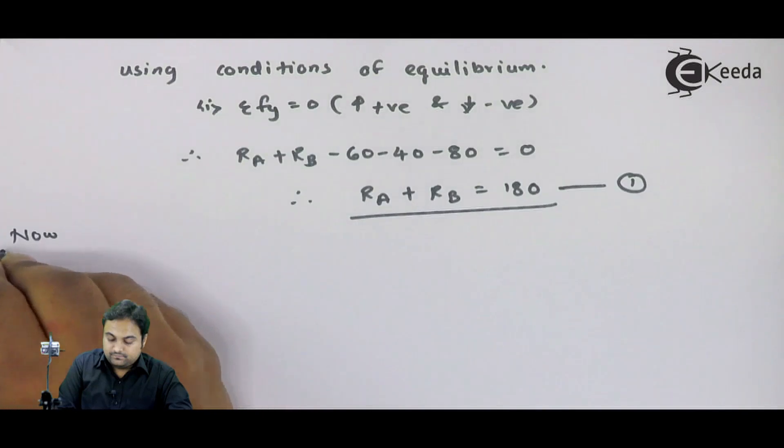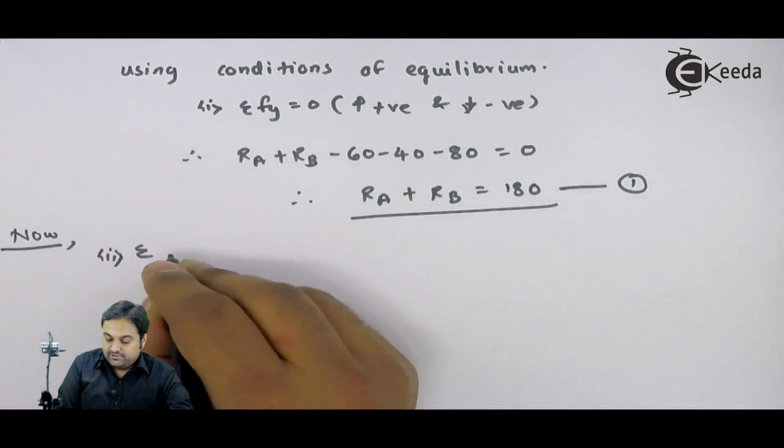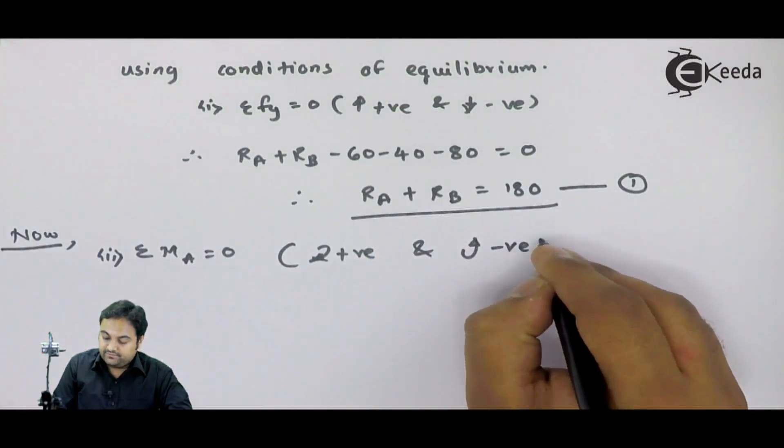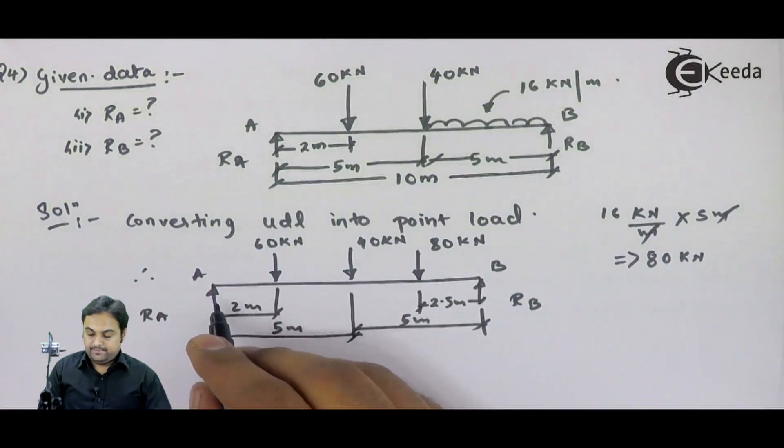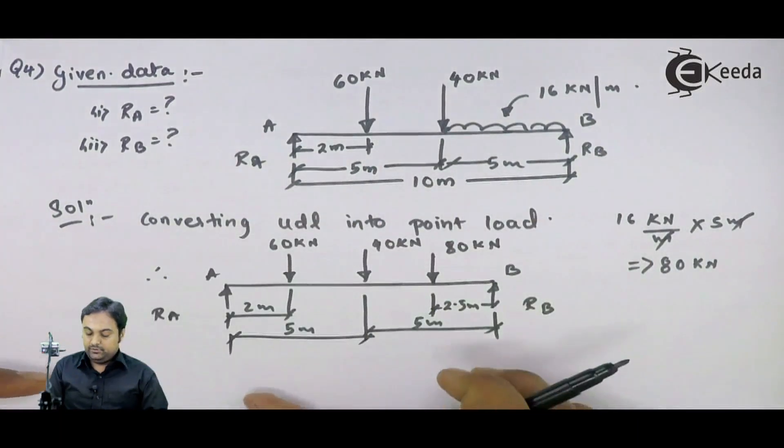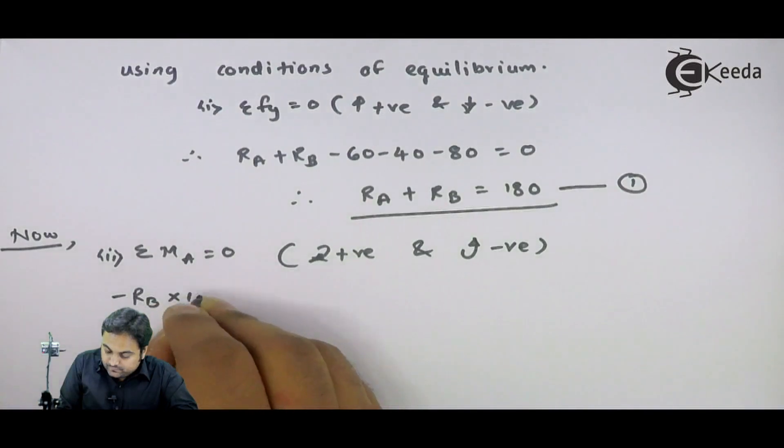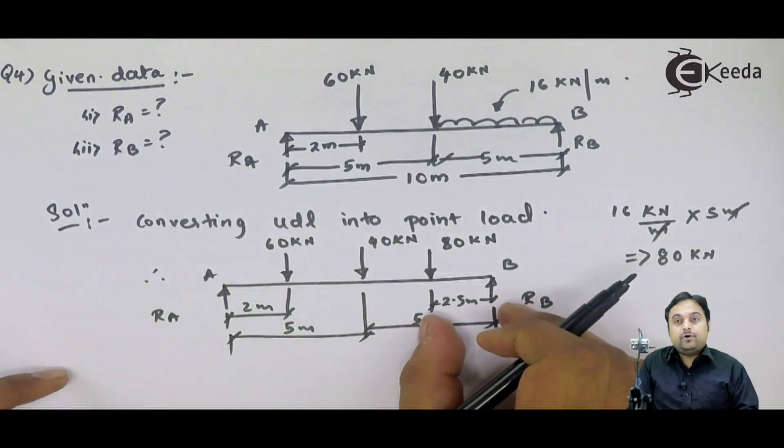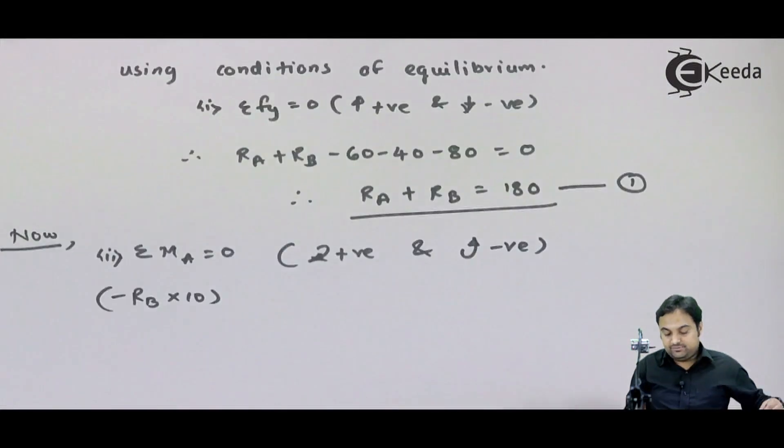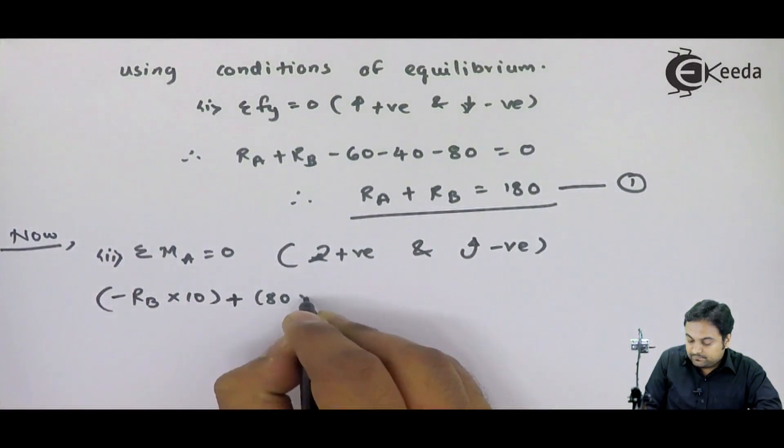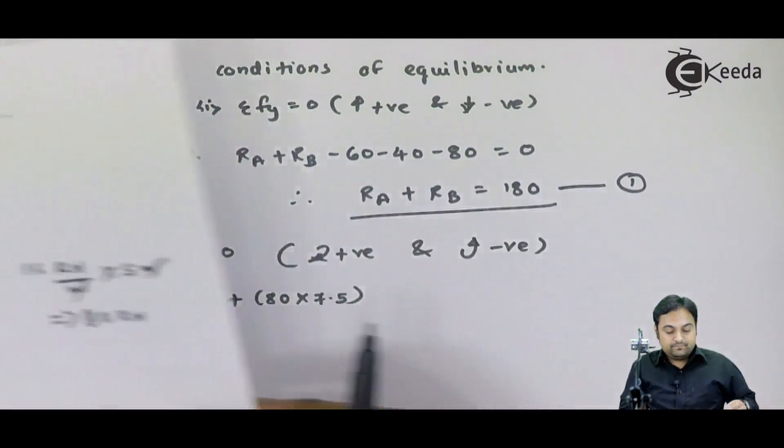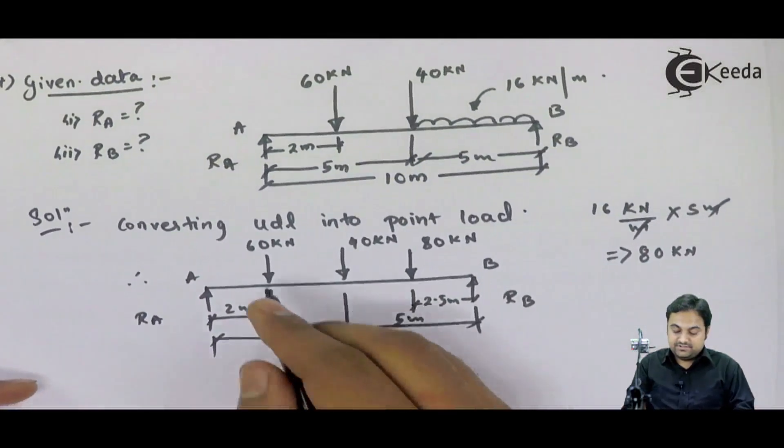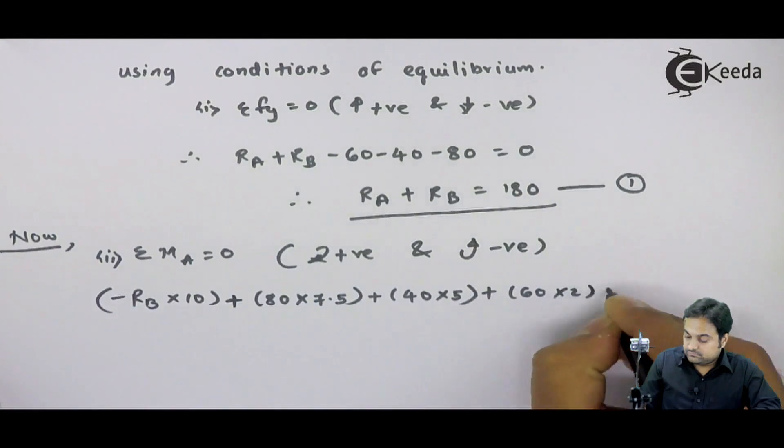Next, I will say that summation of moments about point A is equal to 0. Clockwise moment positive and anti-clockwise moment negative. I am taking the moment of all forces at point A. If I start from RB, this is anti-clockwise moment: minus RB into 10. 80 is producing clockwise moment and it is at 7.5 meters. Plus 80 into 7.5 plus 40 into 5 plus 60 into 2 equals 0.